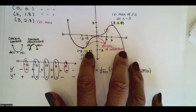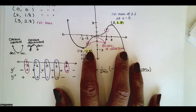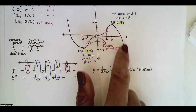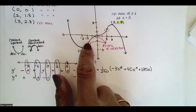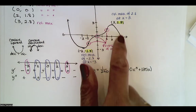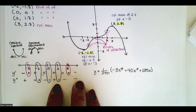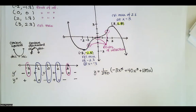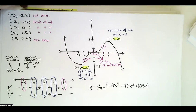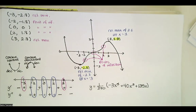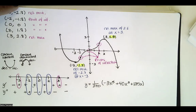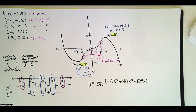When we graphed it ourselves, we had something very similar to what we saw online: concave upward, concave downward, concave upward, concave downward, decreasing, increasing, increasing, decreasing — all consistent, with a relative min, a relative max, and three points of inflection. That's how we apply the second derivative test. In the next video, we'll look at doing something similar with a function that's not a polynomial — something a little bit more interesting.